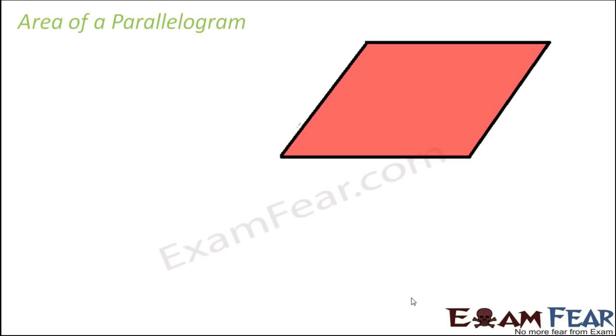So till now we have discussed about the simpler forms of parallelograms, that is rectangles and squares. Now we will talk about any parallelogram in general. So normally, what are the basic features of a parallelogram? Their opposite sides are parallel and equal. So this is how a parallelogram looks like — in this case they do not have right angles involved, but their opposite sides are always parallel and equal.